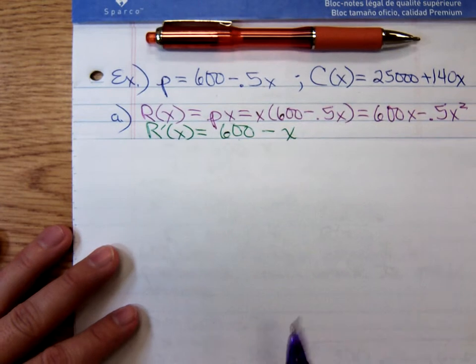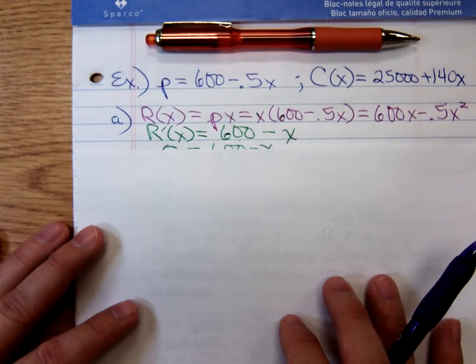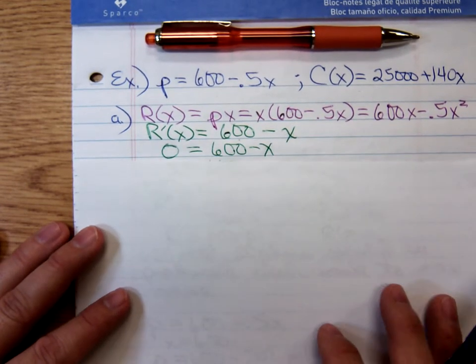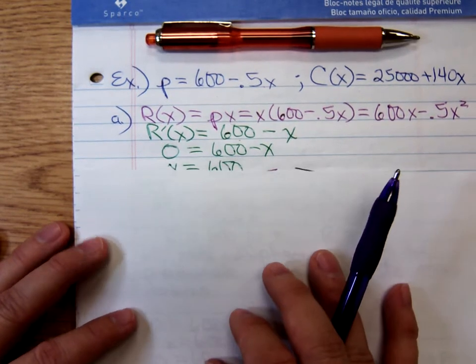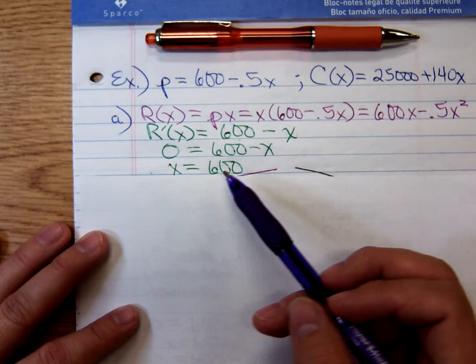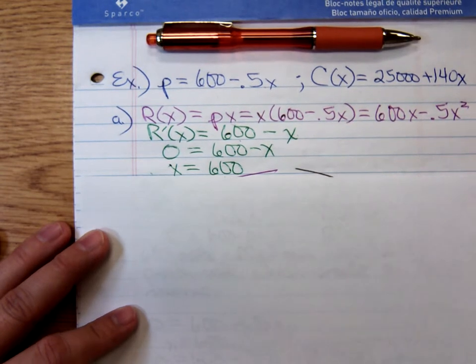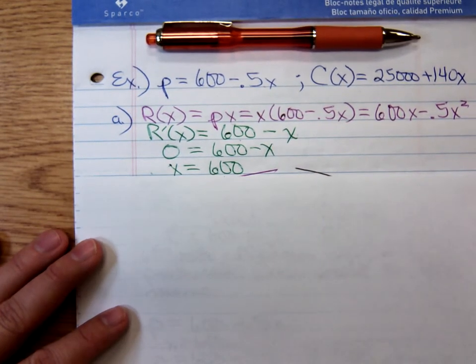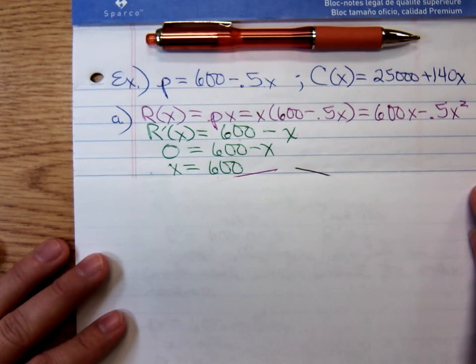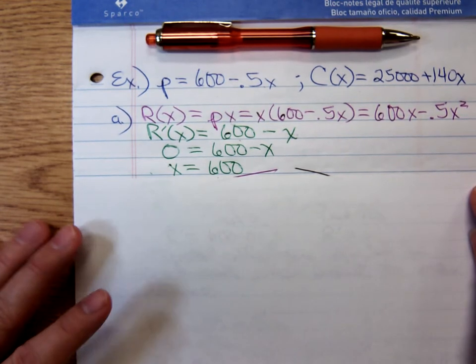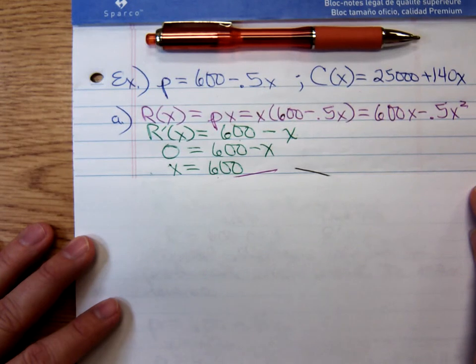Then we differentiated, set it equal to 0. And notice the derivative, the critical number falls out. That's a very nice derivative, a very nice critical number of 600. So we suspect that the company should sell 600 cell phones per week if they wanted to maximize the revenue.